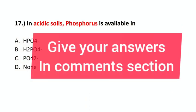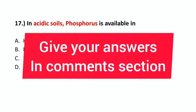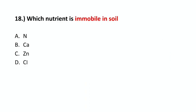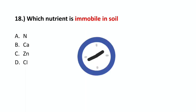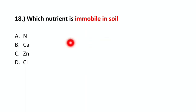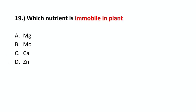In alkaline soil, phosphorus availability — the correct option is option C. Question number 19: Which nutrient is immobile in plants?